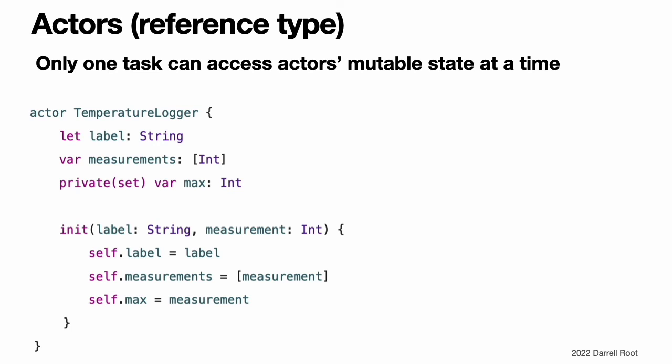Actors. Like classes, actors are reference types, so the comparison of value types and reference types in classes applies to actors as well as classes. Unlike classes, actors allow only one task to access their mutable state at a time, which makes it safe for code in multiple tasks to interact with the same instance of an actor. For example, here is an actor that records temperatures. You introduce the actor with the actor keyword, followed by its definition inside a pair of braces. The temperature logger actor has properties that other code outside the actor can access, and restricts the max property so only code inside the actor can update the maximum value.